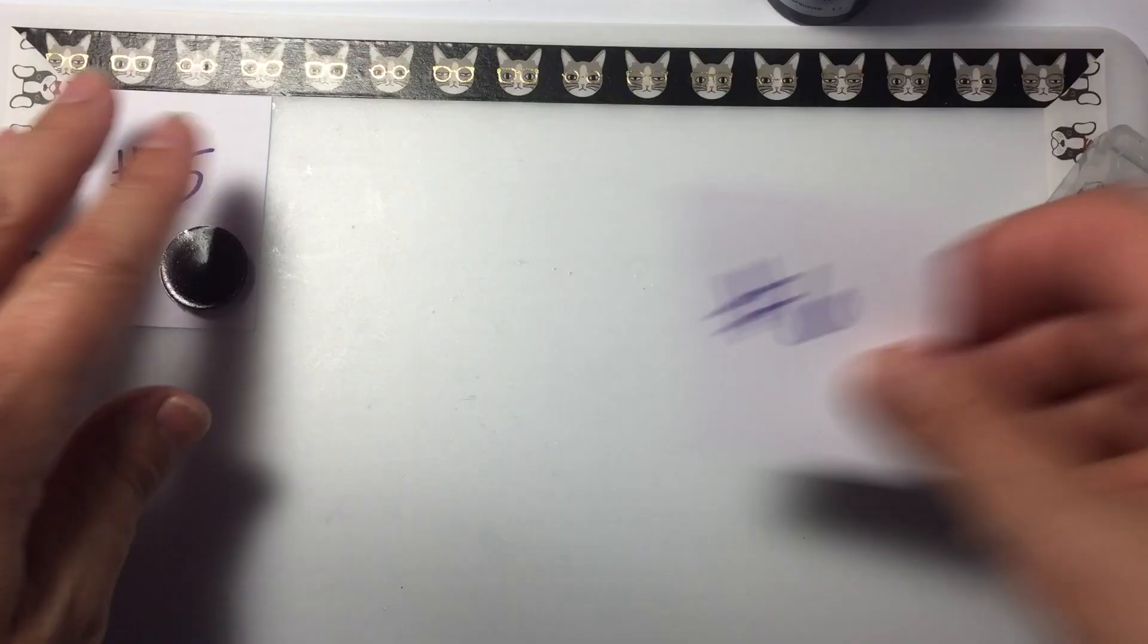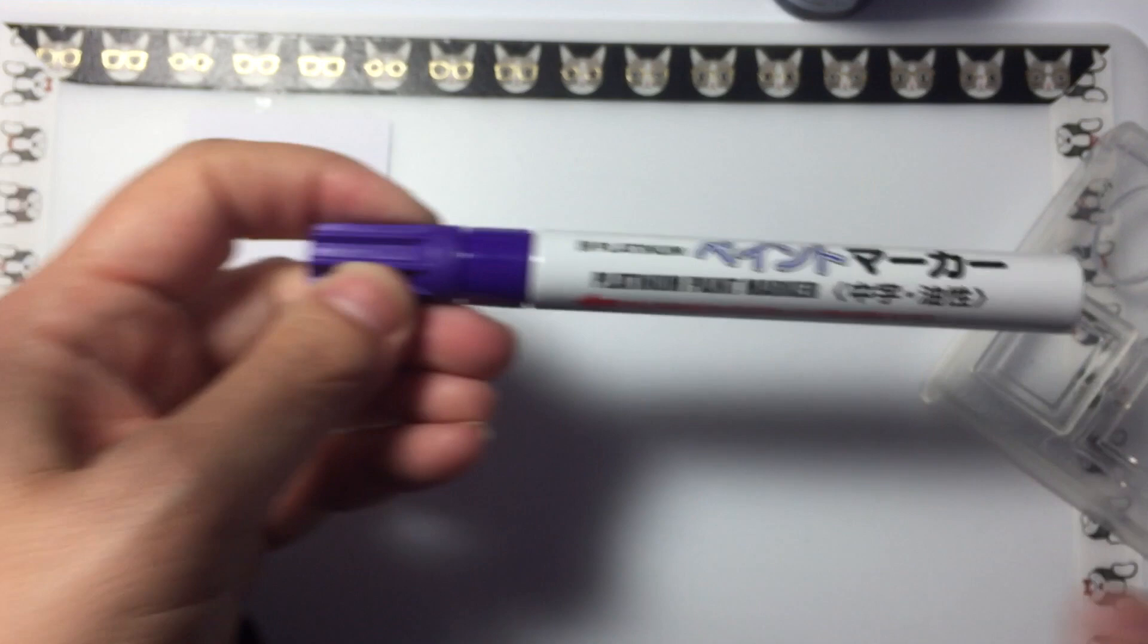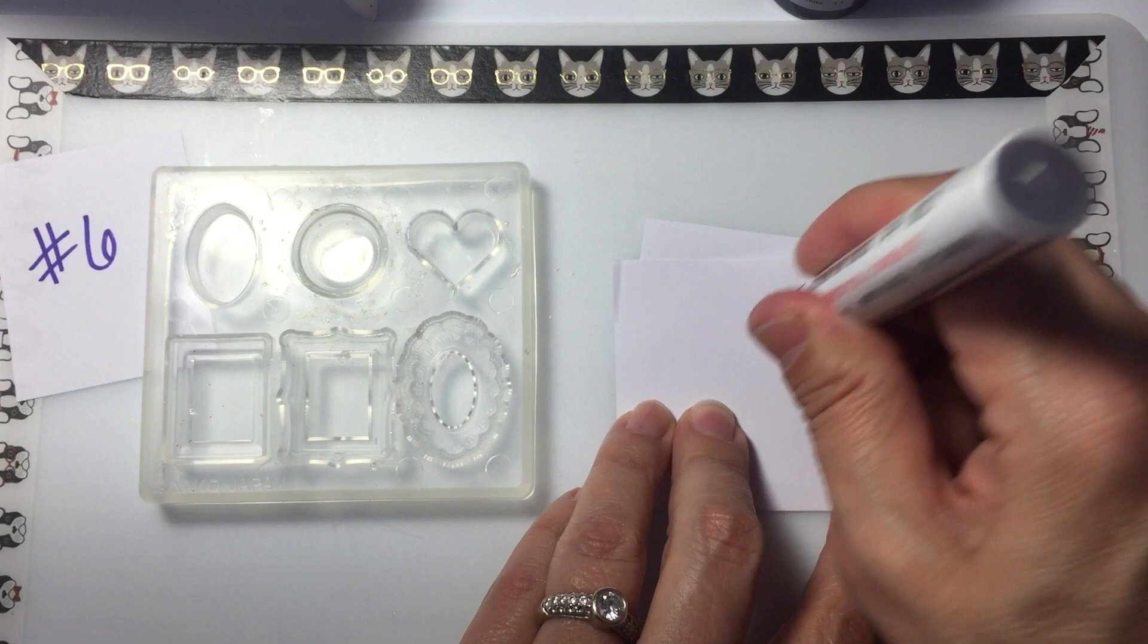The sixth method of coloring resin that I'm going to use is paint markers. These are kind of tricky. What I did first was made a clear circle out of the resin and then I paint on top of it. This is a brand new marker. I got it at the 100 yen store.